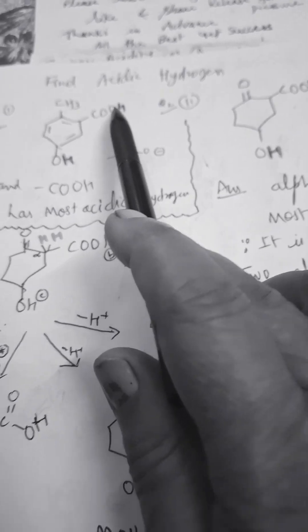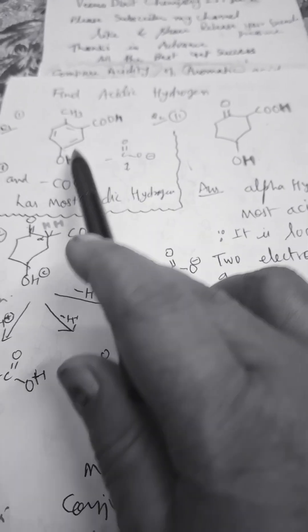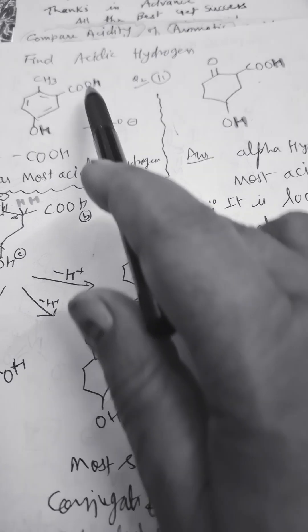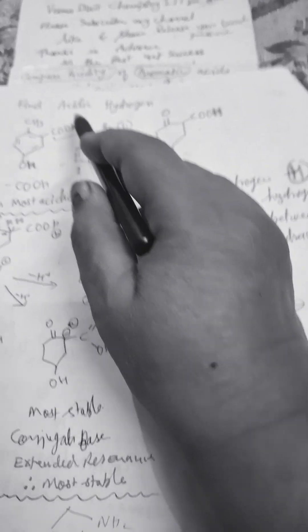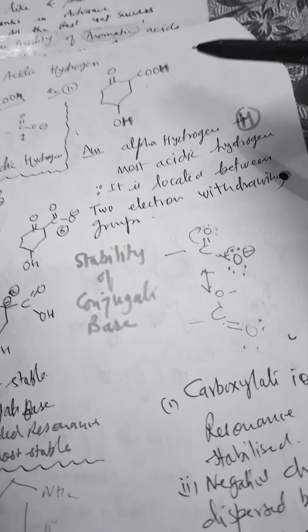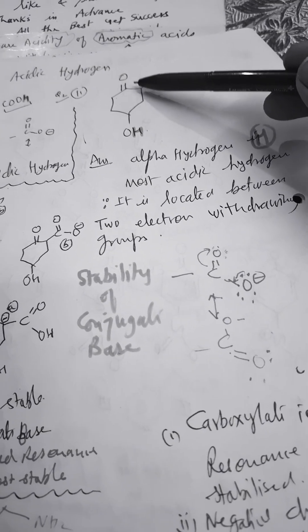The COOH group has more resonance stabilization compared to OH group. Also, the pKa of the carboxylic group is always more than phenolic OH. So this COH is the more acidic hydrogen.